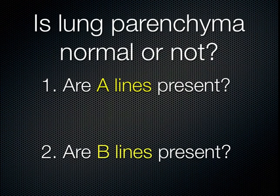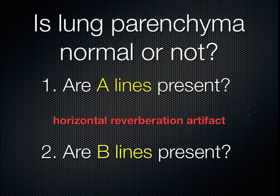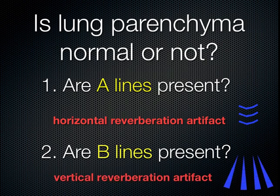Going back to the two fundamental questions: is the lung parenchyma normal or not? The underlying questions are: are A lines present and are B lines present? It is the evaluation of these artifacts, created by interfaces with different acoustical impedances, that gives you clues to the underlying lung pathology. A lines are horizontal reverberation artifact; B lines are vertical reverberation artifact.